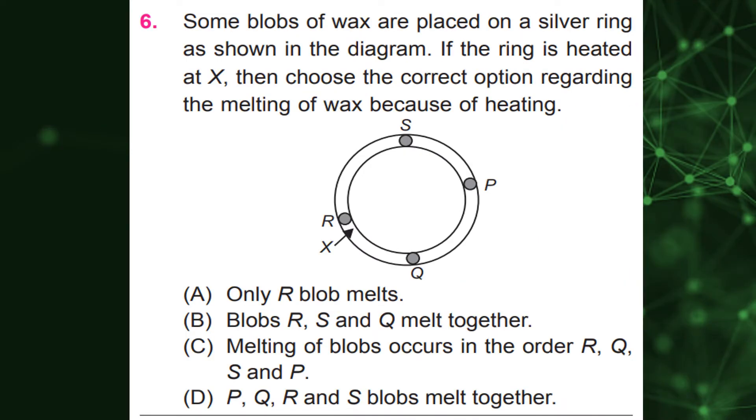Some blobs of wax are placed on a silver ring as shown in the diagram. If the ring is heated at X, then choose the correct option regarding the melting of wax because of heating. C, melting of blobs occurs in the order R, Q, S and P.